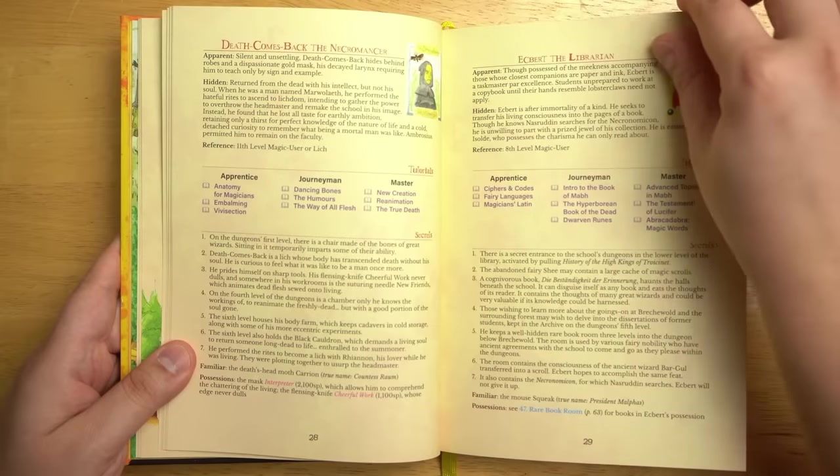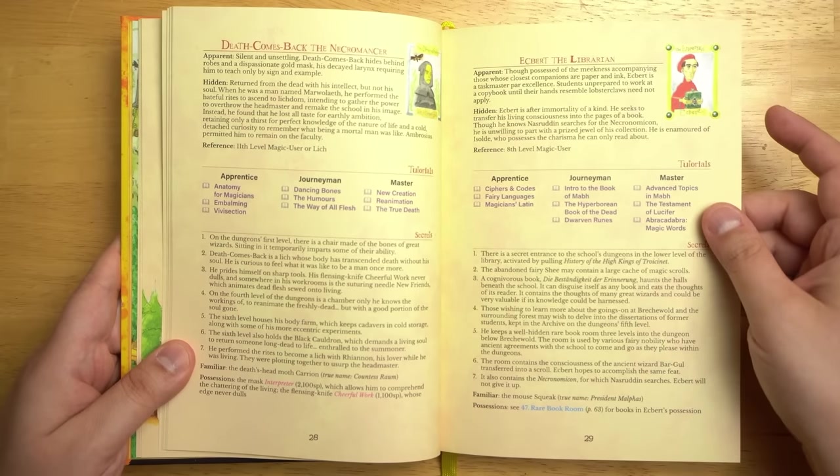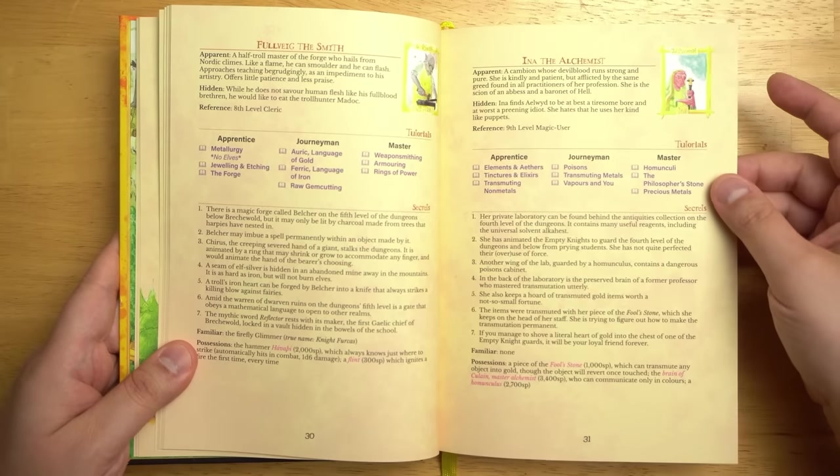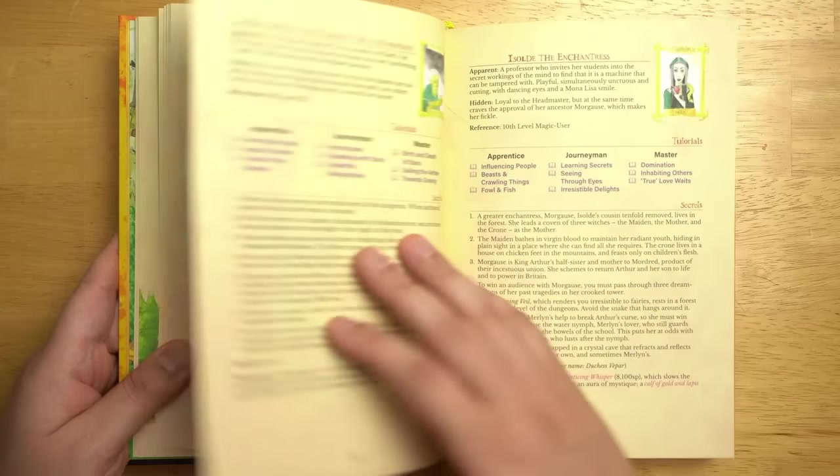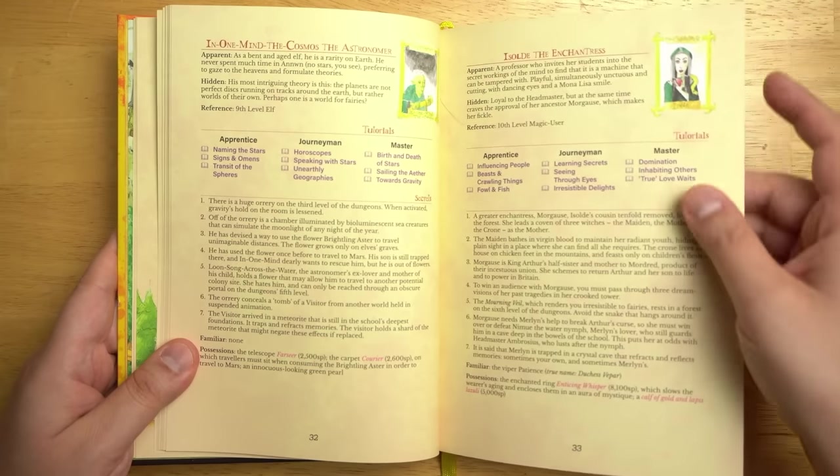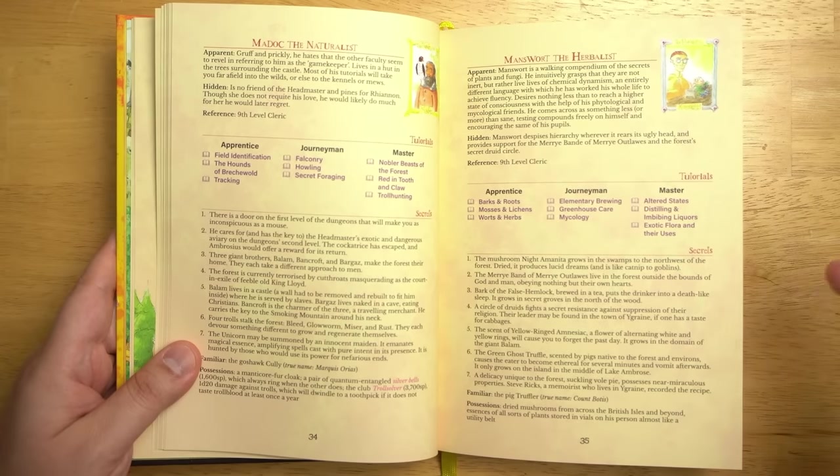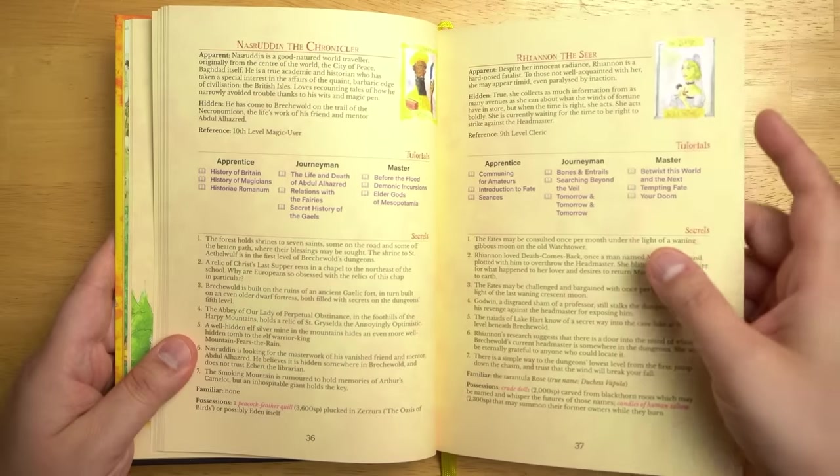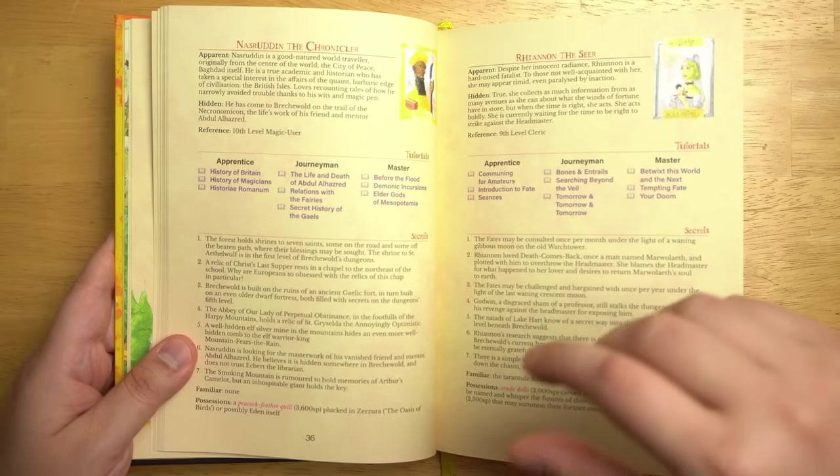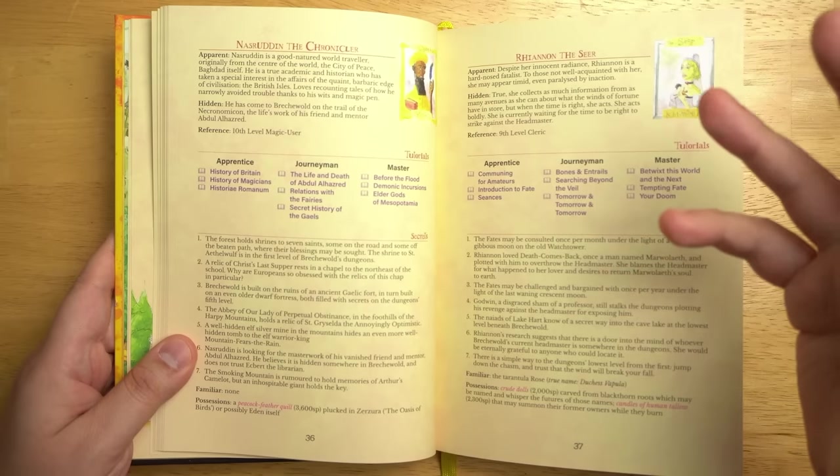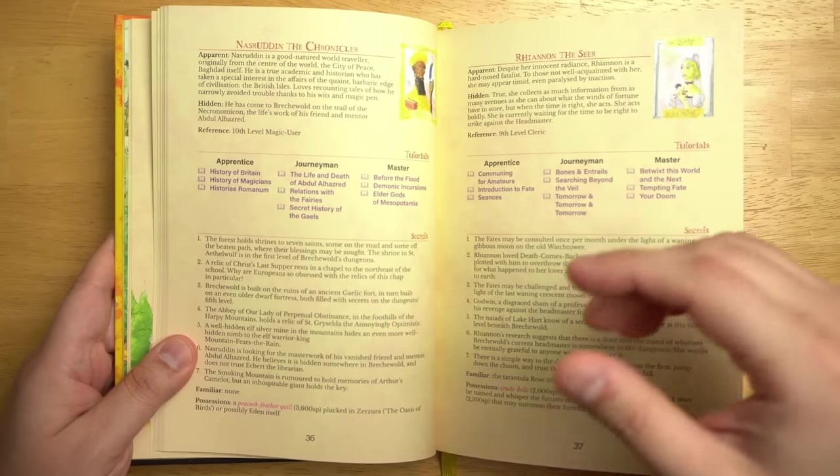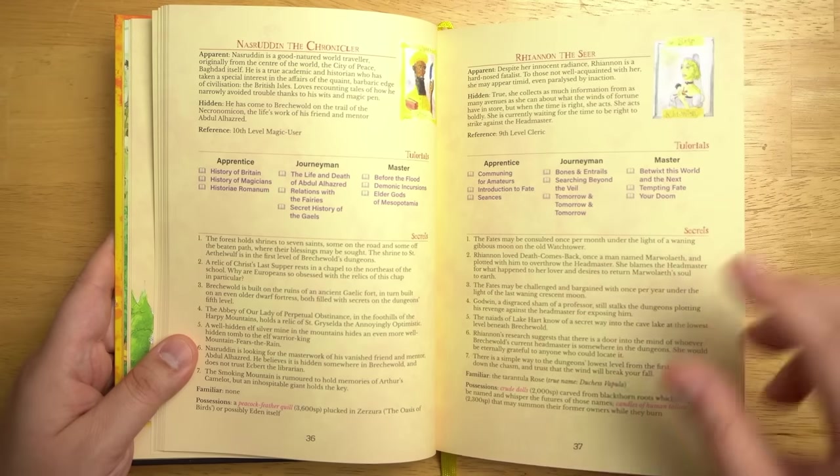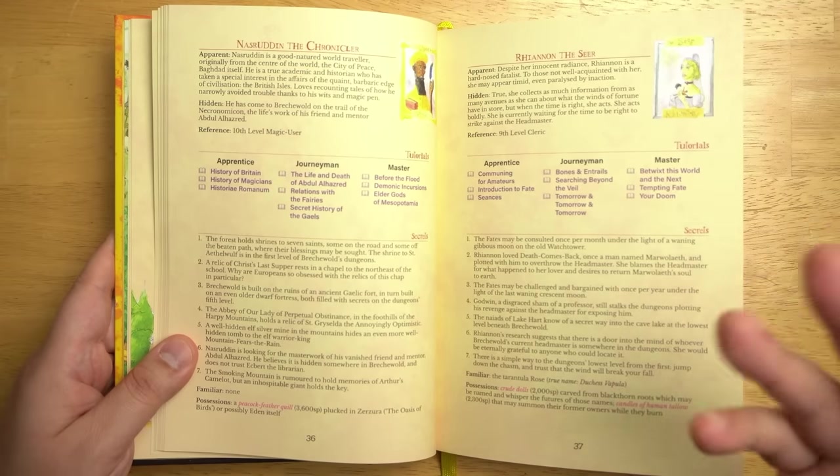There is Death Comes Back, who is a necromancer who previously tried to take over the school. But since becoming a lich has now more important things to worry about than simply running a school. There is a half-troll smith. There is an alchemist. There's an astronomer. And a lot of these have layers or sections of the dungeon that are kind of themed around them. There is a lot of weirdness in here. Like I said, this is, like the back of the book said, this is influenced by people like Jack Vance, as well as T.H. White's Once and Future King. So there's a lot of cosmic strangeness. And it is a dungeon underneath a wizard school. So the explanation, a wizard did it, is going to work really well in most of the cases here.